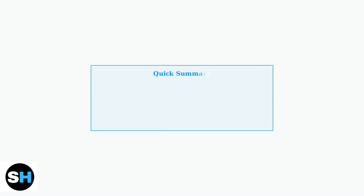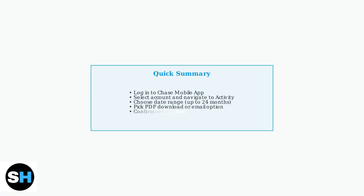Your transaction history will either download directly to your device or be sent to your email, depending on the option you chose. The Chase Mobile app makes it easy to access your transaction history on the go. Remember, you can download up to 24 months of data in PDF format or have it emailed directly to you.